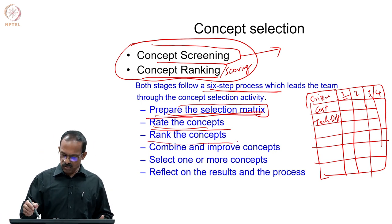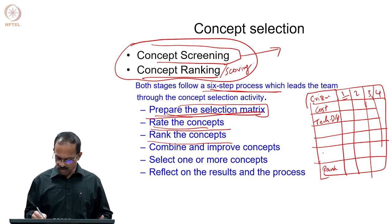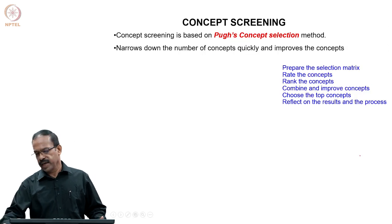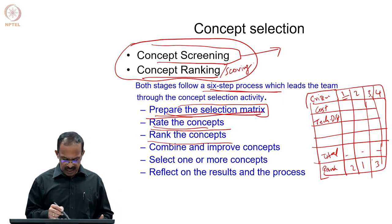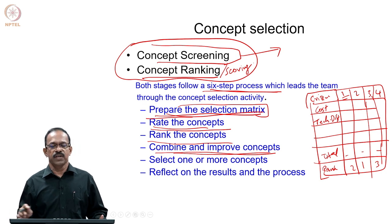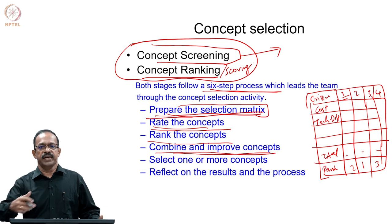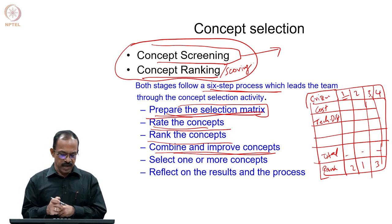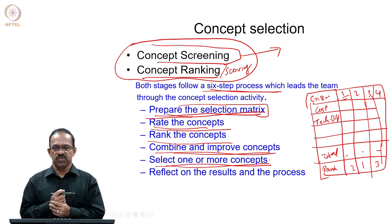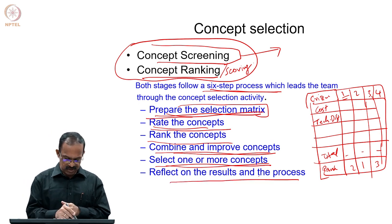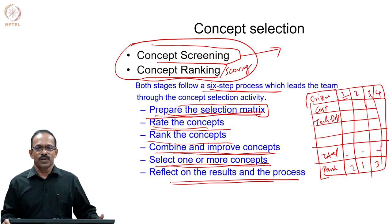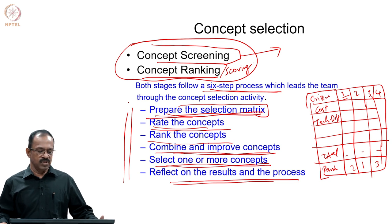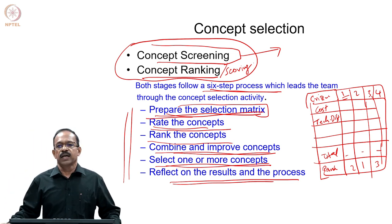Then rank the concepts. Based on the ratings, find out the total score and then rank them as 1, 2, 3, etc. After ranking, check whether anything can be combined to improve the concepts — is there a way to combine some concepts or improve some by attacking the negatives? Once you do that, you may get a better concept. Then see what rank it gets and select one or more concepts for the next stage. Finally, reflect on the results and process — look at the whole process to see whether anything is missing or any wrong assumption was made.